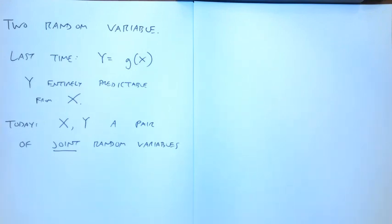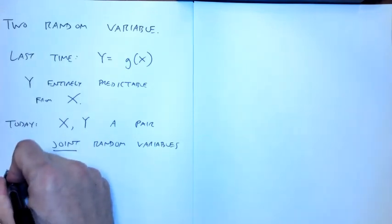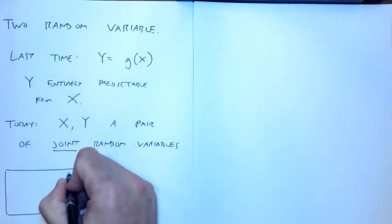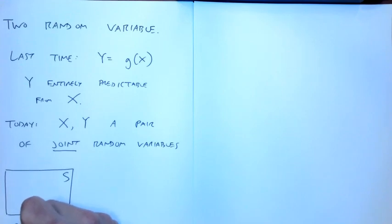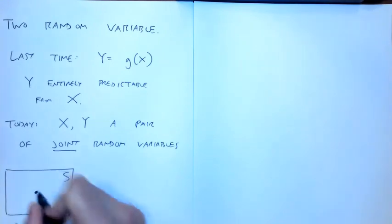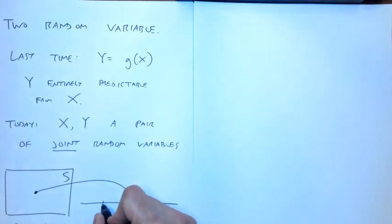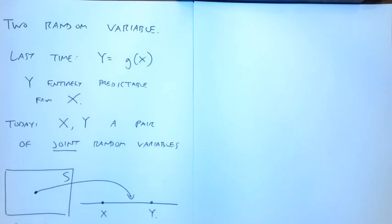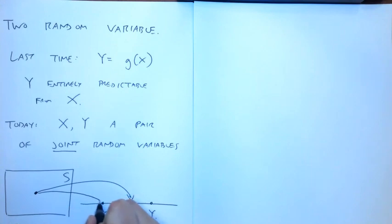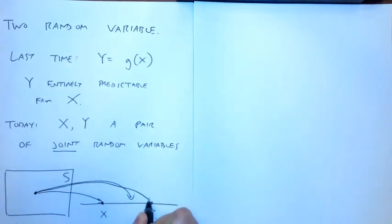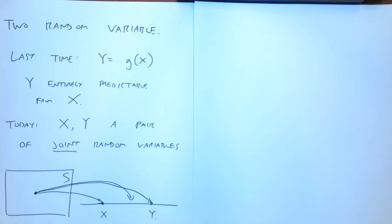We're interested in understanding how these random variables are related to each other. The same kind of setup as before: I take some experiment with some sample space, and what comes out is instead of one real number, two real numbers — x and y.